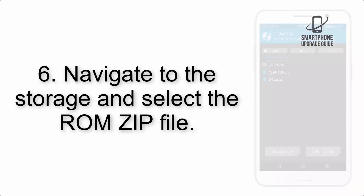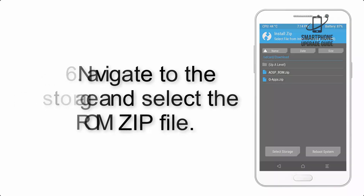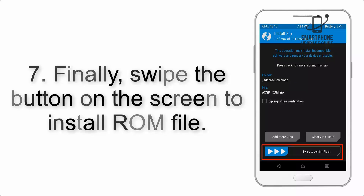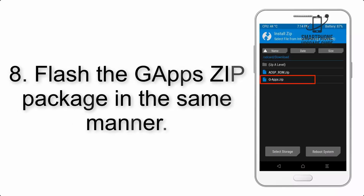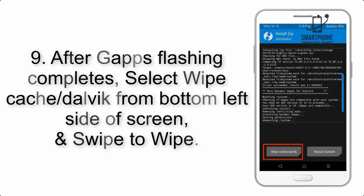Step 5: Go back to the recovery main screen and tap on the Install button. Step 6: Navigate to the storage and select the ROM zip file. Step 7: Swipe the button on the screen to install the ROM file.